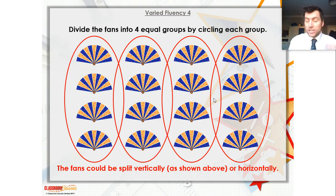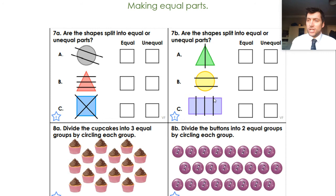What I'd like you to do now is you're going to have a go at these sheets. Now, you don't have a copy of the sheet. I don't need you to print the sheet. Look at the questions and try and answer them on a piece of paper at home. I'll show you the answers in a minute. So pause the video, look at the questions, and see how you get on. 7A and 7B are thinking about unequal or equal physical shapes. Have they been split equally or unequally? And then you've got your number of cupcakes, and your number of buttons. Pause your video while you do that, please.